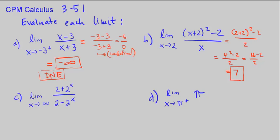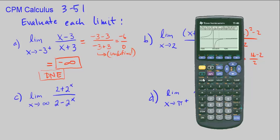Part C: limit as x approaches infinity of (2 + 2^x) over (2 − 2^x). Since x is getting really, really big, we can plug in 1, 2, 3, 4, and keep going — to a thousand, ten thousand, a million — to see the trend. We could also plug this into our calculator to see what is happening.